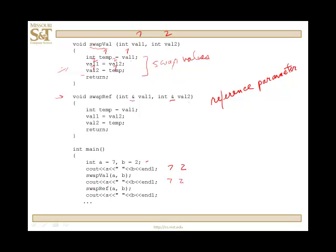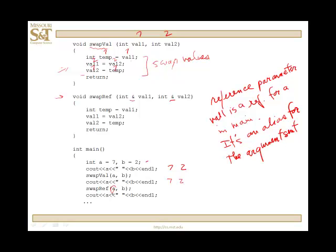So val1 and val2 are references. Val1 is a reference for a in main. Another way of looking at it is it's an alias for the argument sent, in this case the variable a.